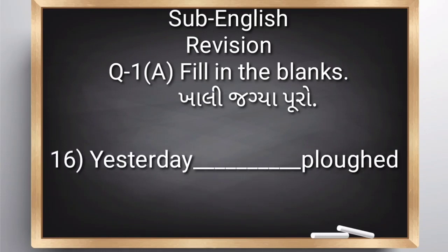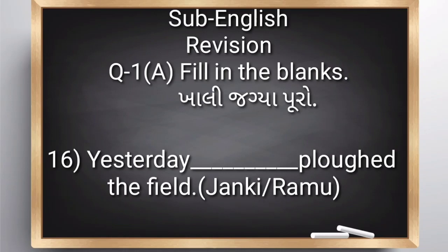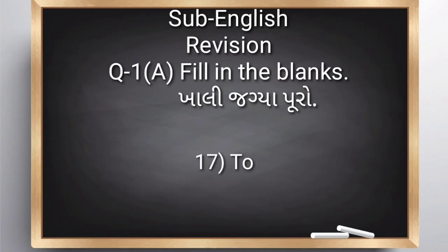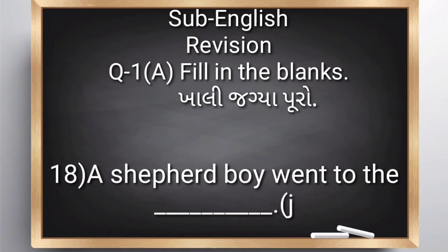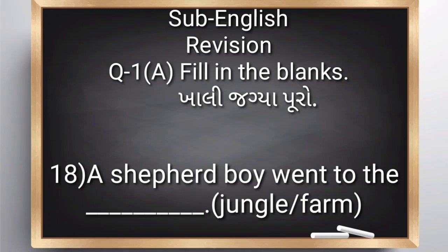Sixteenth: 'Yesterday blank ploughed the field.' Option: Janky or Ragu. Friends, yesterday in Boda Bai's field, who was ploughing the field? Janky. Seventeenth: 'Today blank is picking mangoes.' Option: Kanu or Ramu. Today in Boda Bai's field, who is picking mangoes – Kanu or Ramu? Eighteenth: 'A shepherd boy went to the blank.' Option: jungle or farm. As we learned in our story, where does the shepherd boy go? Does he go to the jungle, or to the field? Jungle.